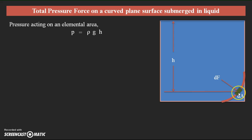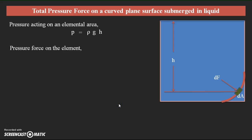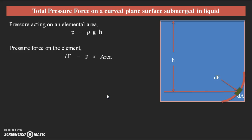The elemental area is also assumed at a depth of h, so automatically the pressure acting on that elemental area is also equal to ρgh. The pressure force on that element is: force df is equal to pressure into area, which is ρgh·dA. This is the pressure force on this particular elemental area dA.